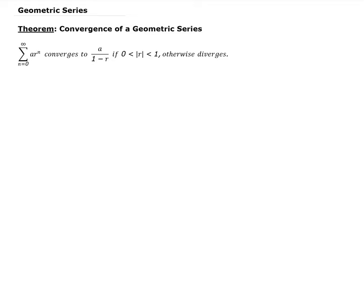To prove this result, we're going to start with the partial sums. The partial sums of the geometric series look like this. We have A — that's for when N is 0, so we get A times R to the 0, which is A. For N equals 1, we get A times R. For N equals 2, we get AR squared, and so on.